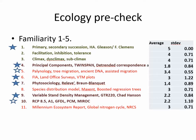A couple years ago when I taught this class, I sent around a little poll asking people which of these concepts they were familiar with. Some things came back and people said they were quite familiar with things like primary succession, facilitation, inhibition, tolerance of succession models, and the idea of climax forests. Some things came back with very low familiarity, like phytosociology, releves, Braun-Blanquet, and some of the more mathematical parts of community ecology — principal components, TWINSPAN, etc.